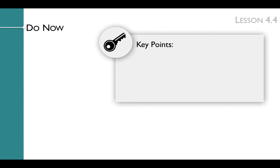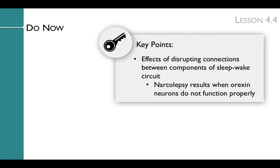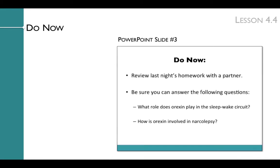The key points of the lesson's Do Now are the effects of disrupting connections between components of the sleep-wake circuit, specifically that narcolepsy results when orexin neurons do not function properly. We'll get to these key points by reviewing last night's homework in which students analyzed original research. In the Do Now, students review last night's homework with a partner, making sure that they can answer the questions: what role does orexin play in the sleep-wake circuit, and how is orexin involved in narcolepsy?